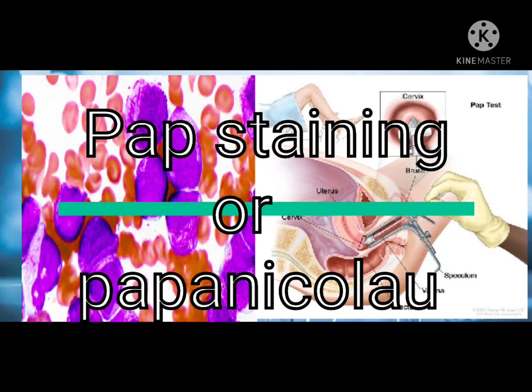Pap smear: a procedure in which a small brush or spatula is used to gently remove cells from the cervix so they can be checked under a microscope for cervical cancer or cell changes that may lead to cervical cancer. A pap smear may also help find other conditions such as infections or inflammation. It is sometimes done at the same time as a pelvic exam and may also be done at the same time as a test for certain types of human papillomavirus. Also called pap test and Papanicolaou test.